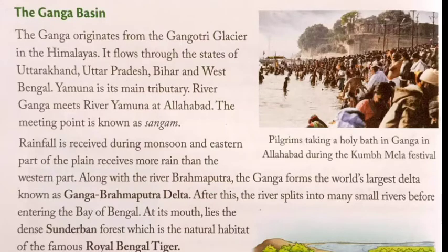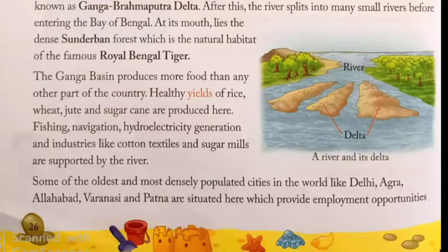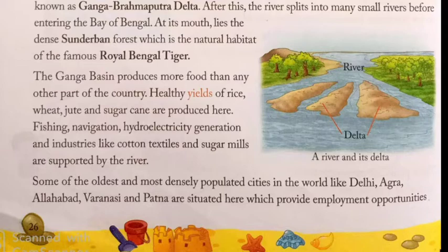Rainfall is received during monsoon and the eastern part of the plain receives more rain than the western part. Along with the river Brahmaputra, the Ganga forms the world's largest delta, known as the Ganga-Brahmaputra Delta. The river then splits into many small rivers before entering the Bay of Bengal. At its mouth lies the dense Sundarbans forest, which is the natural habitat of the famous Royal Bengal tiger. The Ganga Basin produces more food than any other part of the country. Healthy yields of rice, wheat, jute and sugarcane are produced here. Fishing, navigation, hydroelectricity generation and industries like cotton textiles and sugar mills are supported by the river.